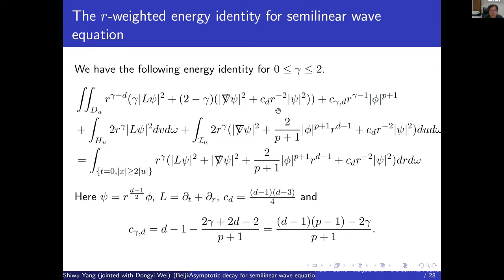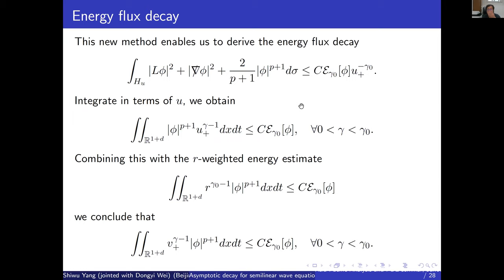To prove the decay estimate for the potential energy: the Dafermos–Rodnianski method shows the energy flux through outgoing null hypersurfaces decays in terms of the distance u to the light cone. Integrating in terms of u gives a spacetime integral, and combining this with the r-weighted energy estimates yields the main estimates of the theorem — the potential energy spacetime integral decay.